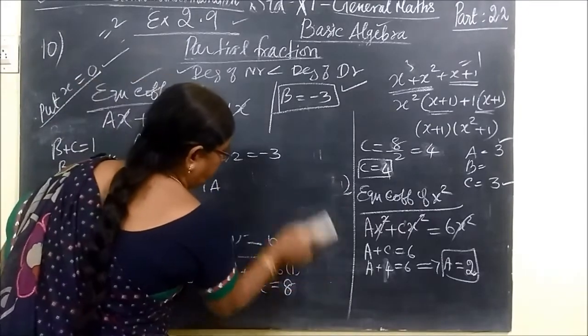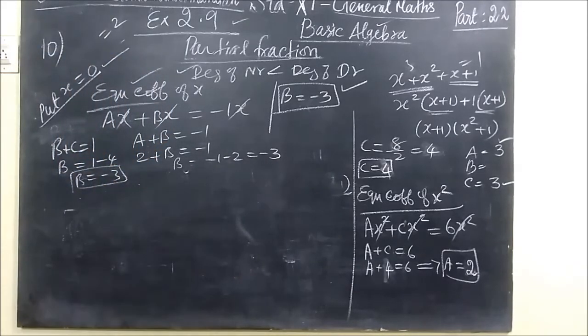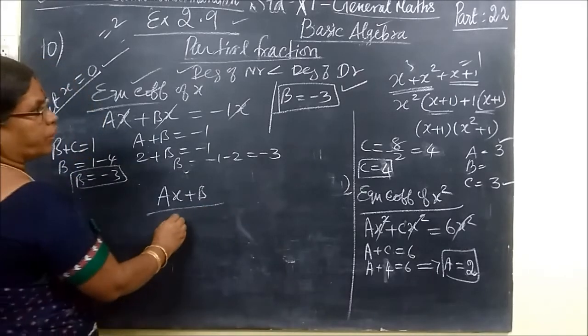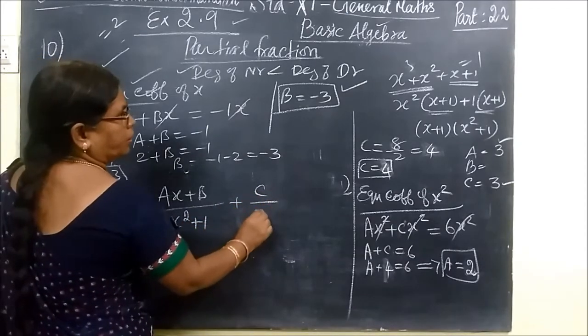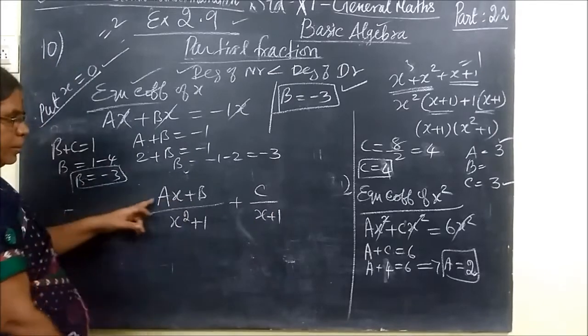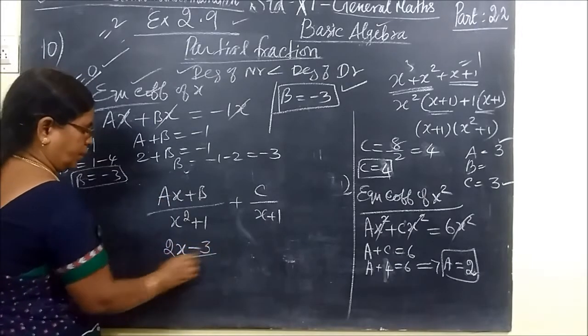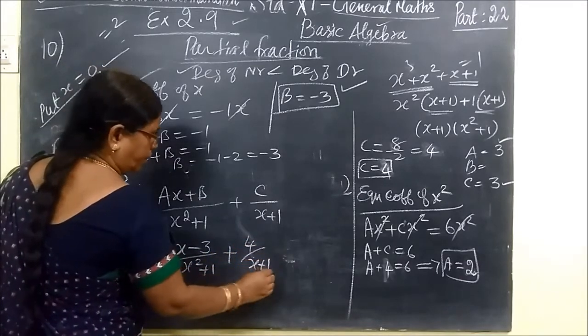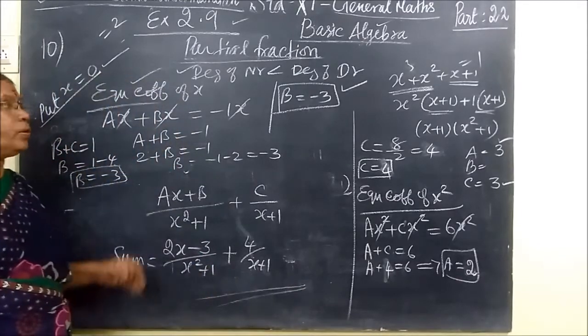Here you have written A by, so Ax plus B by x² plus 1, plus C by x plus 1. So A value 2, so 2x. B value minus 3 by x² plus 1, plus C value 4 by x plus 1. So this is so very easy for you, and you can follow this.